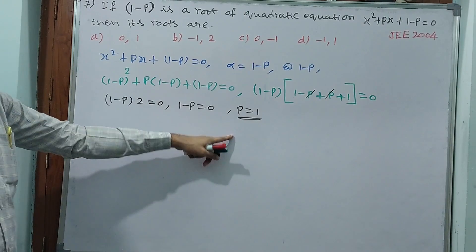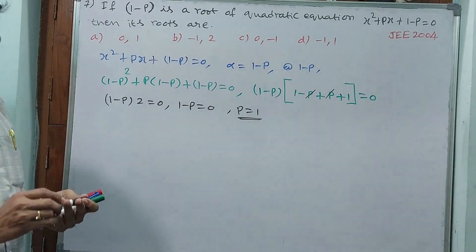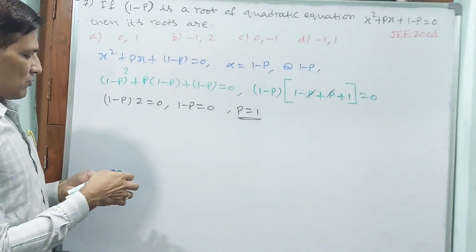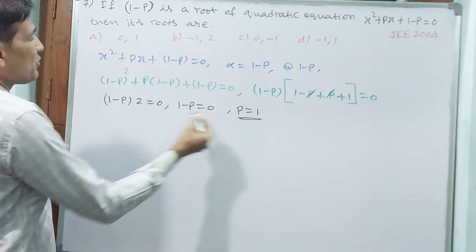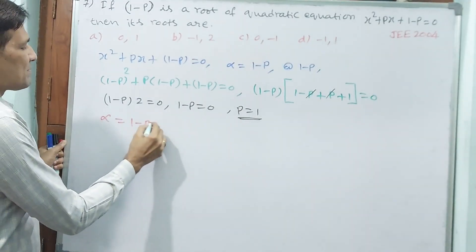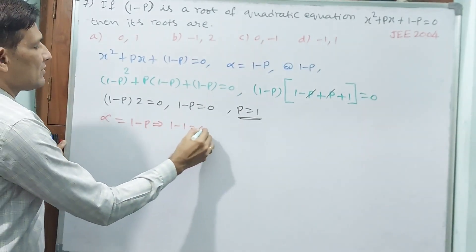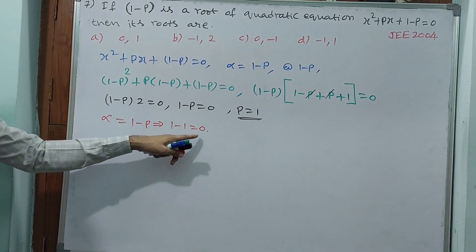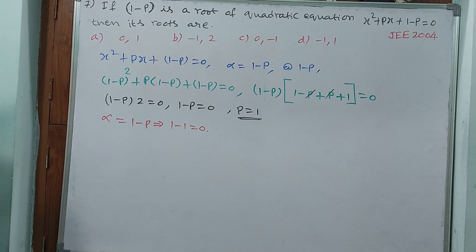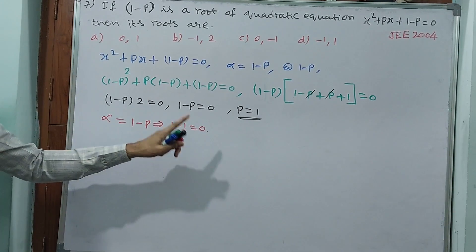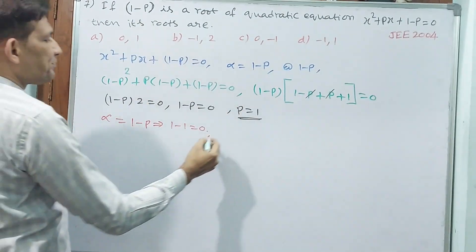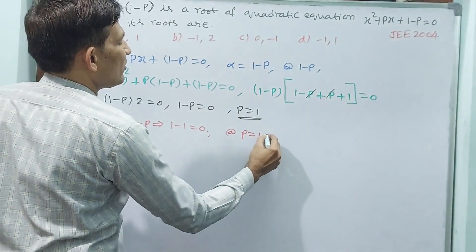They are not asking for p — they are asking for the roots. With p = 1, substitute into alpha: alpha = 1 - p = 1 - 1 = 0. So one root is zero.